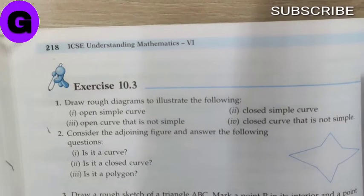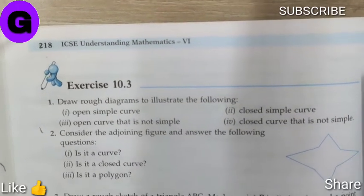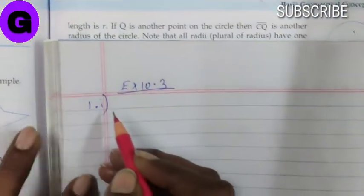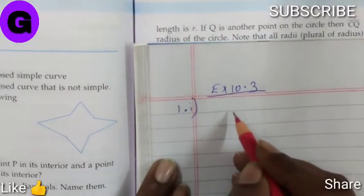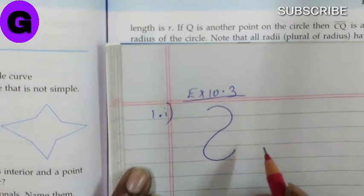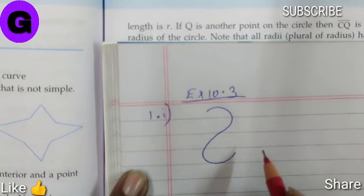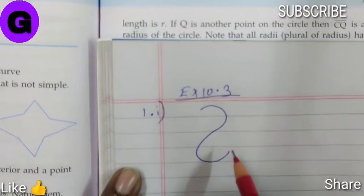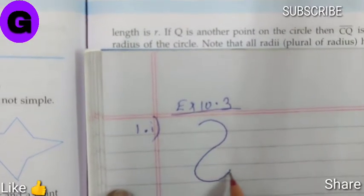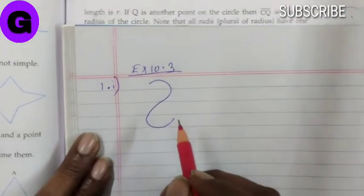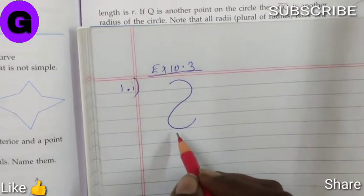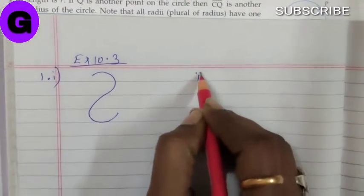According to exercise 10.3, question number 1, we have to draw a rough diagram to illustrate the following. Number 1 is open simple curve. You can make any shape like this. Open curves are those curves which have a different starting and ending point where they do not meet, and simple is when they do not cross each other. Hence this is open simple curve.